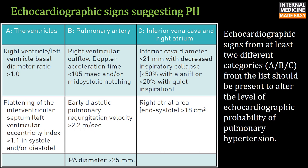Signs related to the ventricles include right ventricle to left ventricle basal diameter ratio of more than 1, and flattening of the interventricular septum. Signs related to the inferior vena cava and right atrium include inferior vena cava diameter of more than 21 mm with decreased inspiratory collapse, and right atrial area of more than 18 cm².